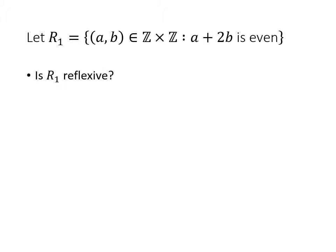In these first examples, we'll look at a relation called R1. R1 has domain and codomain both as the set of integers, Z cross Z, and a pair (a, b) gets into this relation if a + 2b is even. The question is asking, is R1 reflexive?